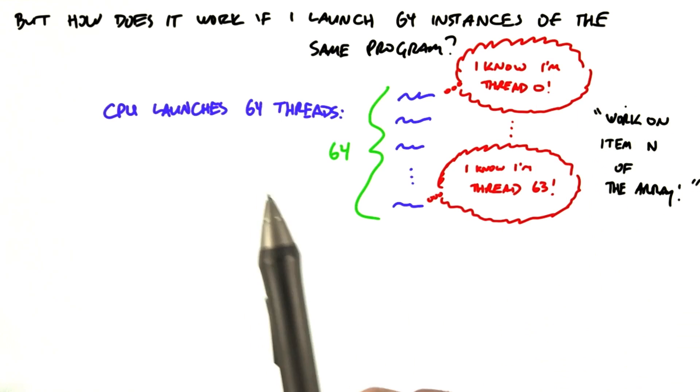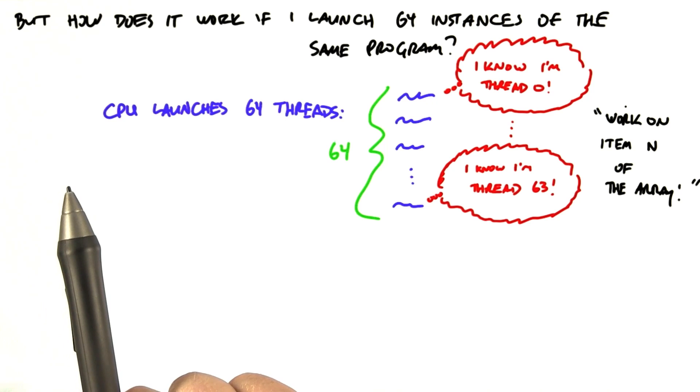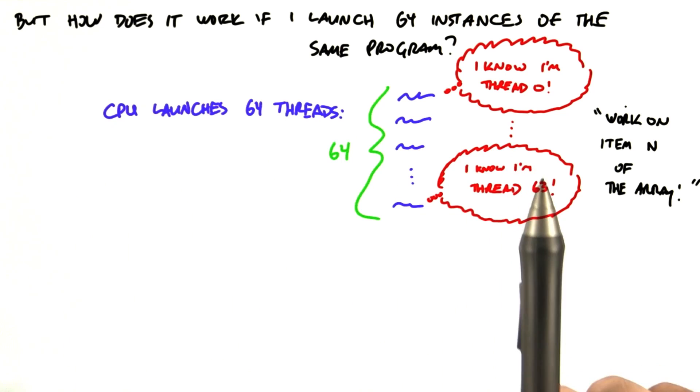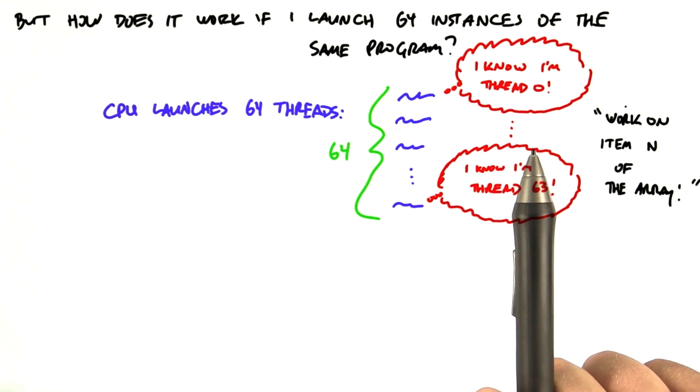So let's summarize here. You write your kernel so that it will run on one thread at a time. Then you will launch many threads, each of which will run that kernel independently.